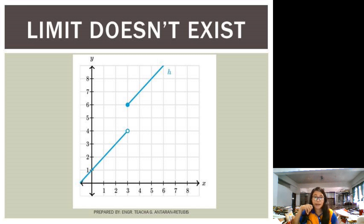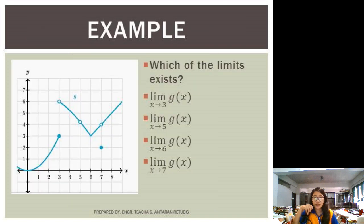we can say that the limit doesn't exist in that function. Okay? There's no limit. For example, another example for you to understand. We have here a function of g. Okay? As you can see, we have here the graph of the function g. The question is, which of the limits exists? So we have here four choices.